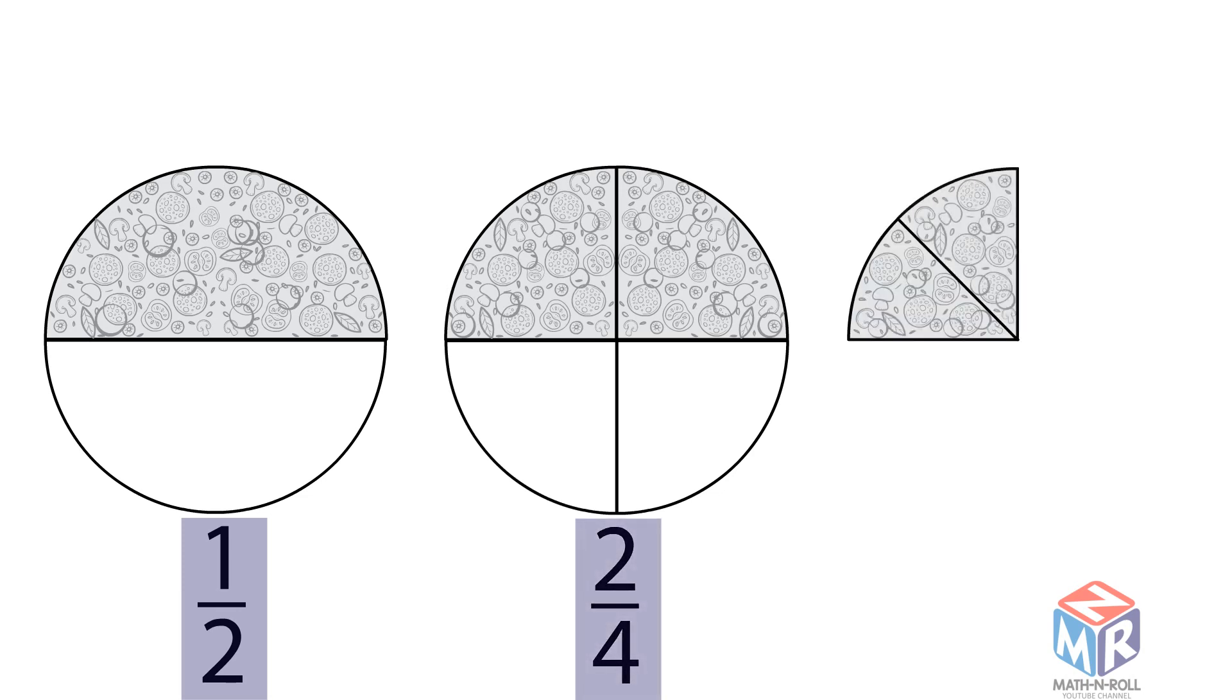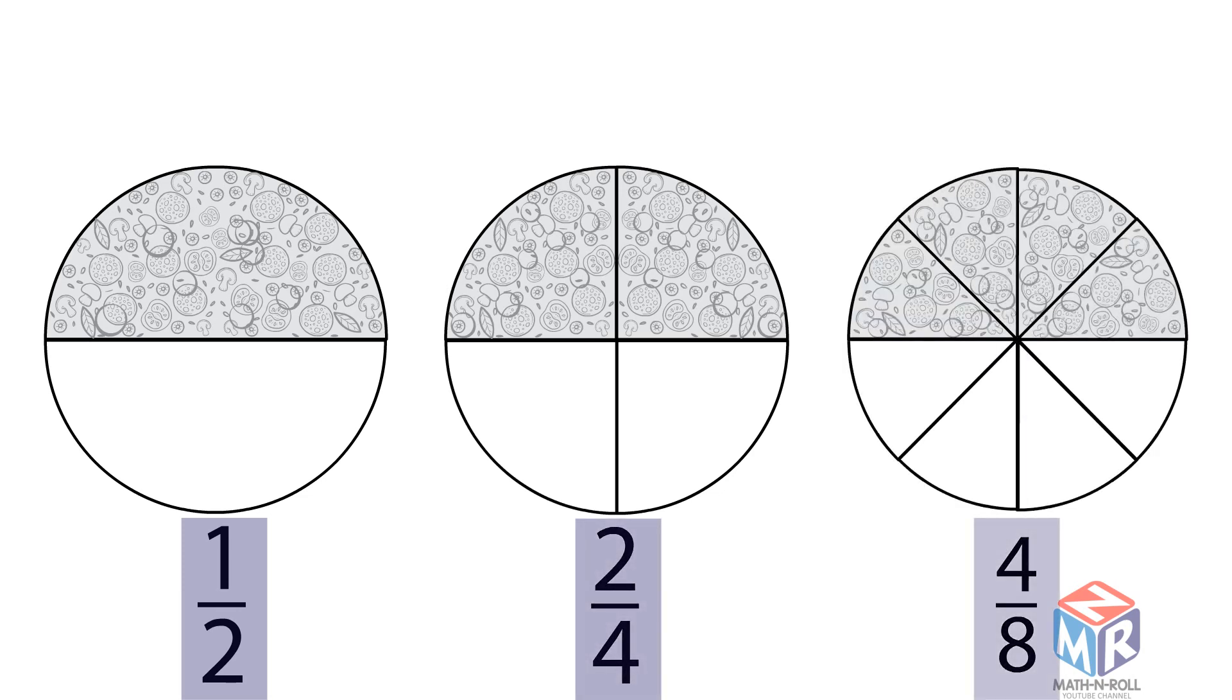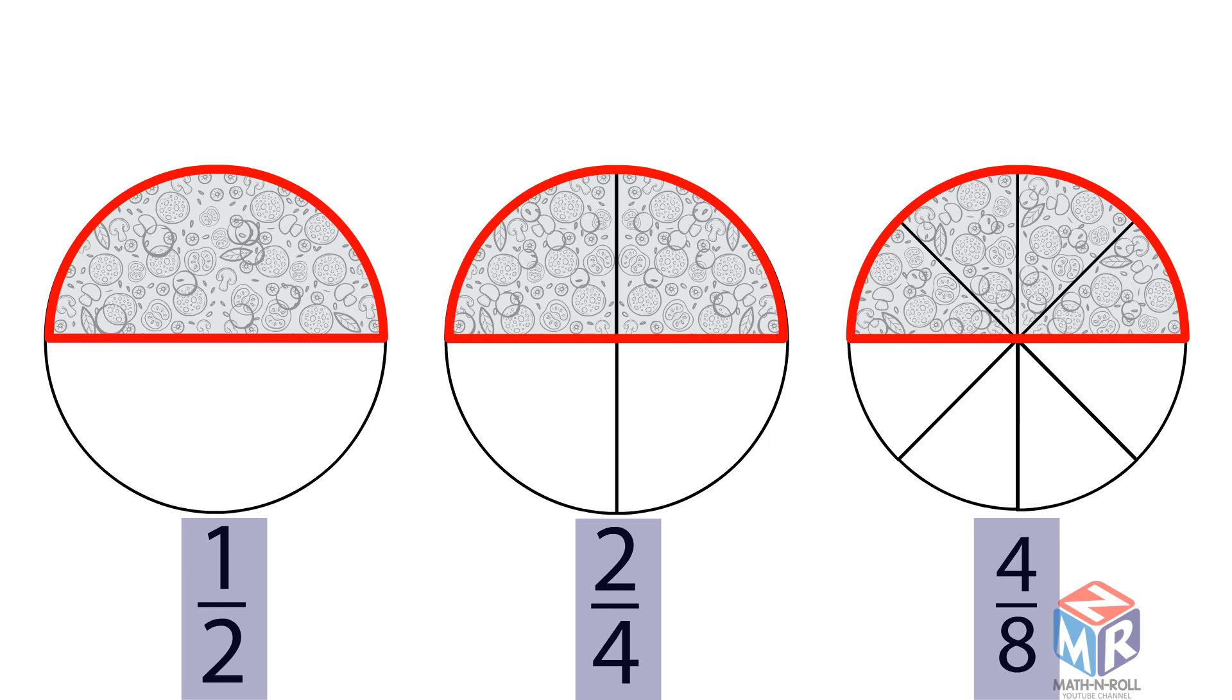We have three pizzas, each of them is divided in half. All of them show the same amount, even though the fractions are different. 1 half equals 2 fourths, which also equals 4 over 8.